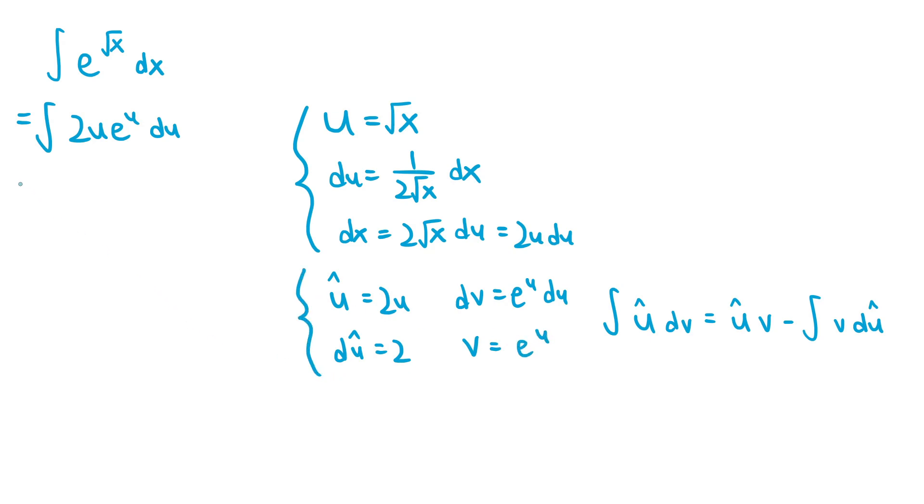If we apply the integration by parts formula, this integral is equal to u hat v, which is 2u e to the u, minus the integral of v du hat, which is minus the integral of 2e to the u du. The integral of 2e to the u is 2e to the u,